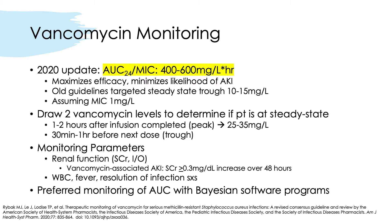To monitor vancomycin, draw two vancomycin levels to determine steady-state. The peak is drawn 1 to 2 hours after the infusion is completed and should be between 25 to 35 mg/L. The trough is drawn 30 minutes to 1 hour before the next dose. Monitoring parameters include renal function — serum creatinine and urine output. Acute kidney injury can occur with vancomycin; monitor for serum creatinine increases greater than or equal to 0.3 mg/dL over 48 hours, which is indicative of vancomycin-associated AKI and warrants discontinuation. Also monitor for resolution of infection signs and symptoms, fever, and white blood cell count. AUC monitoring is preferably done using software programs.